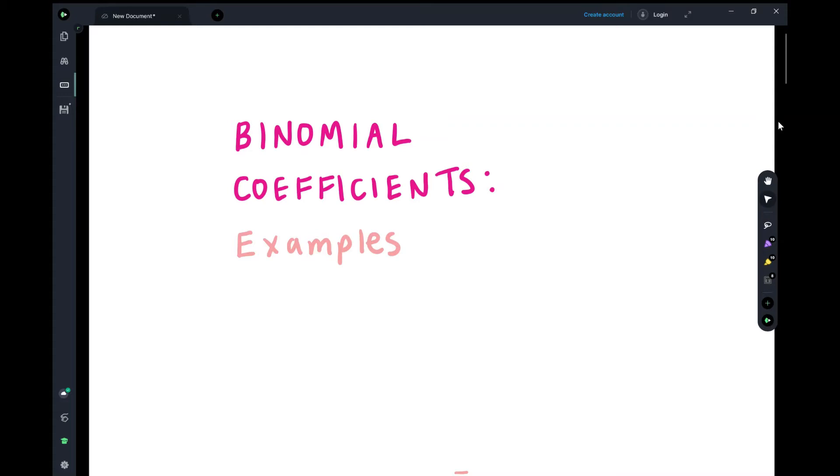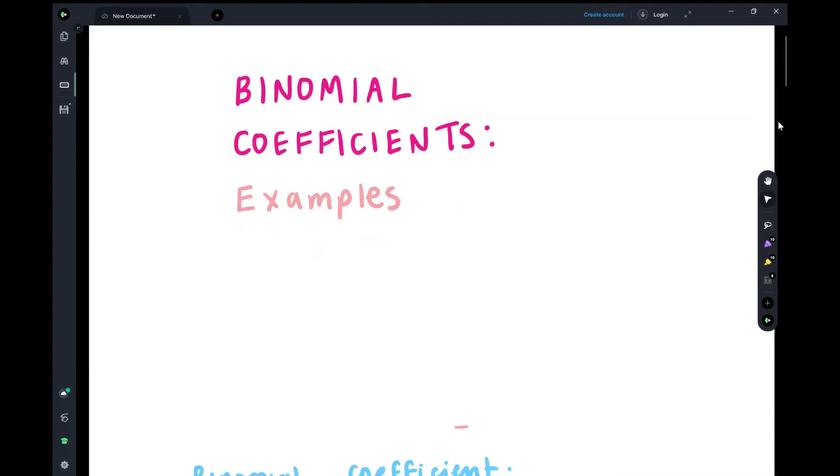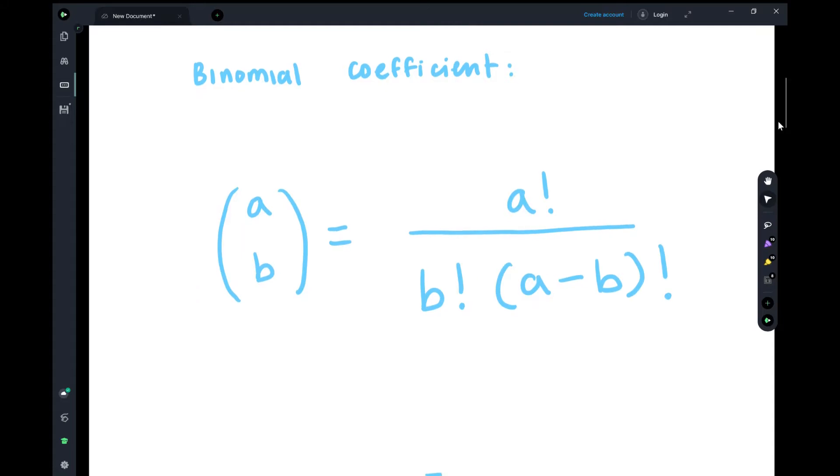So getting started, let's just go over the binomial coefficient formula. This is the definition of binomial coefficient. Here we have this notation (a choose b) in parentheses, which equals a factorial over b factorial times (a minus b) factorial.